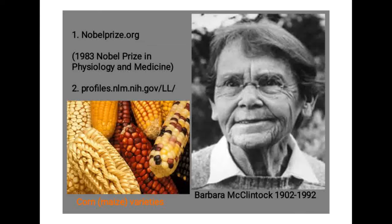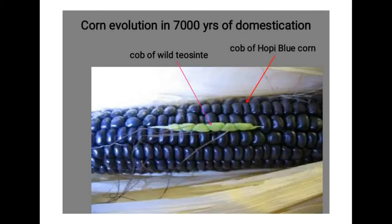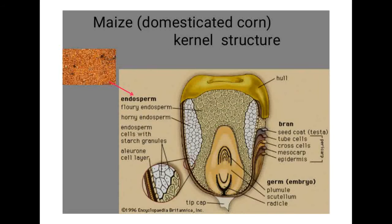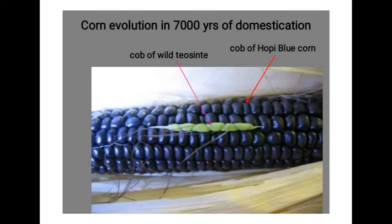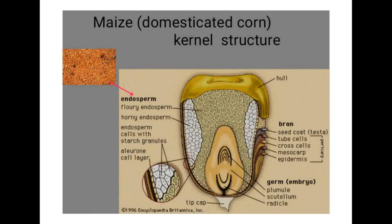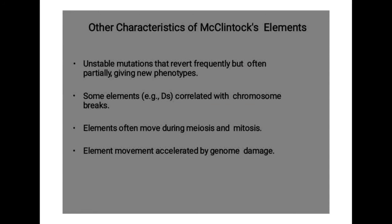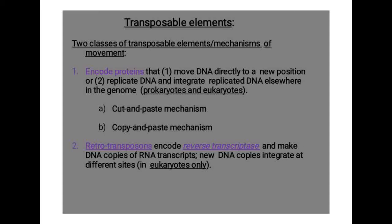Though she discovered transposons in maize, transposable elements were later seen to be of more importance in the medicinal field because they caused various types of genetic disorders. This is a wild corn which was available before, purplish or blackish in color. Later, due to transposable elements and the mutations they caused, the maize color changed from purple to a lighter color.